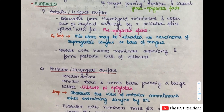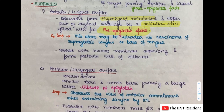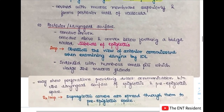The epiglottis has two surfaces: the anterior surface, also known as the lingual surface, and the posterior surface, also known as the laryngeal surface. The anterior surface is separated from the thyrohyoid membrane and the upper part of the thyroid cartilage by a potential space filled with fat, known as the pre-epiglottic space. This space is surgically very important because it is invaded in carcinoma of the supraglottic larynx and in carcinomas of the base of tongue. The anterior surface is covered with mucous membrane superiorly and forms the posterior wall of the vallecula.